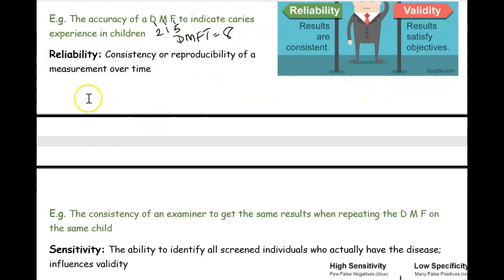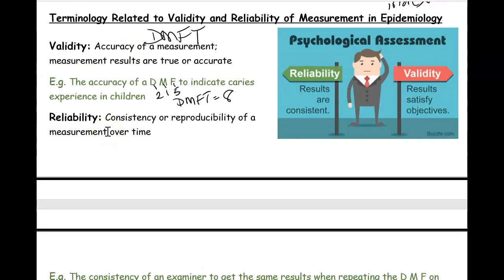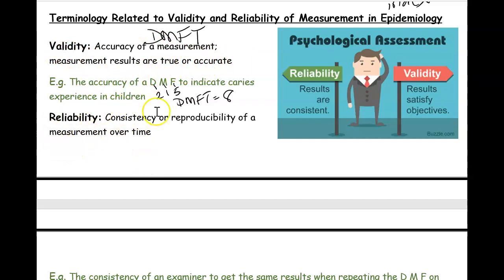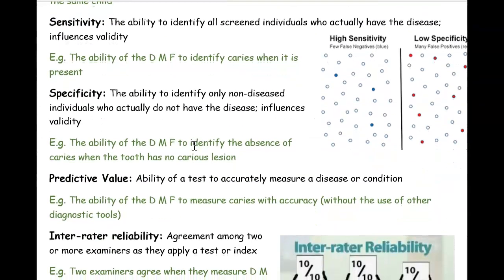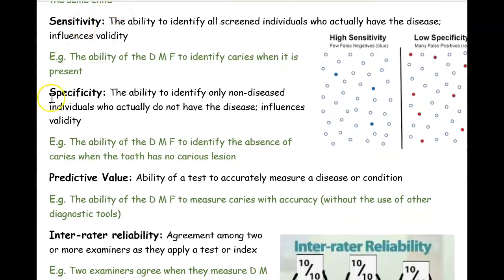High validity and high reliability are both important. When researchers conduct studies, we want the index they're using to be accurate and true — that's validity — and consistent every time — that's reliability. There's also something called sensitivity versus specificity.